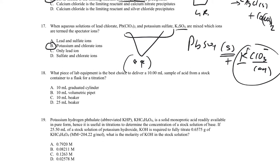Problem 18: to deliver precisely 10 mL of solution for a titration, we use a pipette — just as practiced in lab — so we know the volume we're delivering precisely. The titrant is typically added dropwise from a burette.